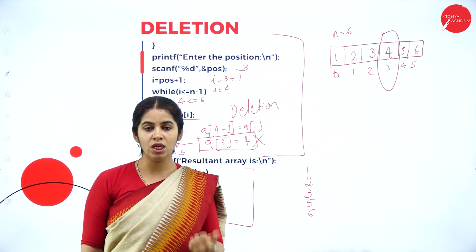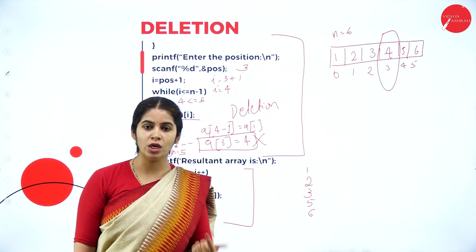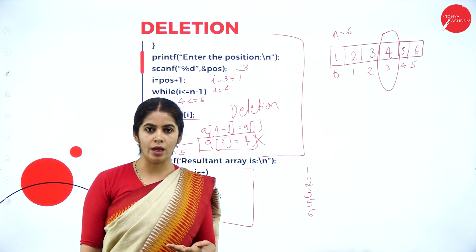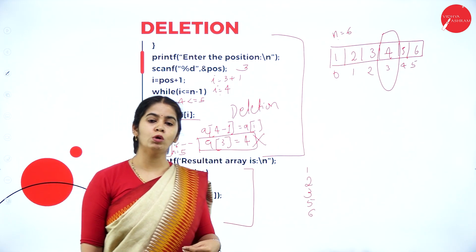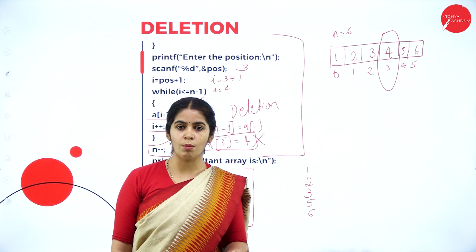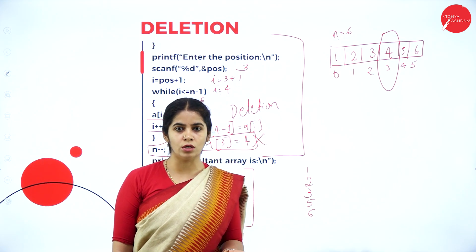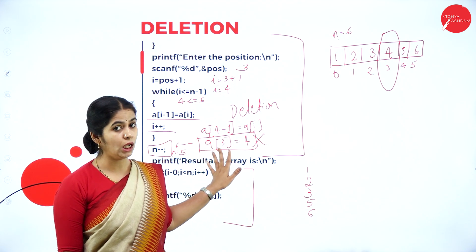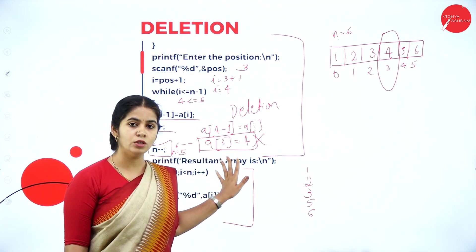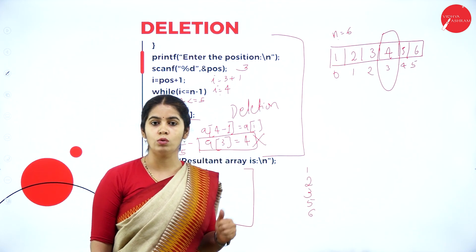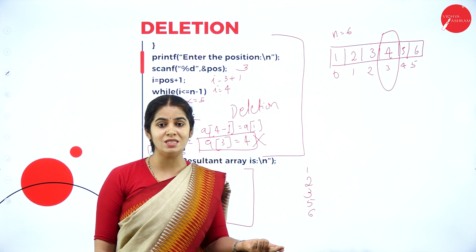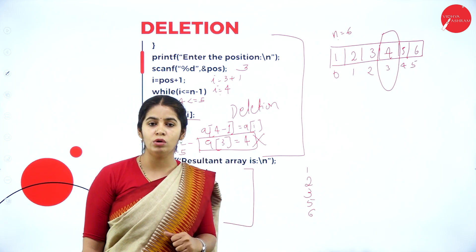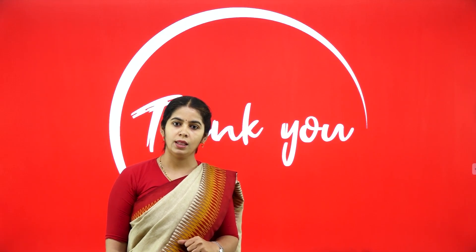So far we have discussed three operations on the array: traversing, insertion, and deletion. In the next class we are going to discuss more operations like sorting and searching. For today's session we have completed how to traverse, what is insertion and how to insert using C code, and how to delete using C code. Thank you.